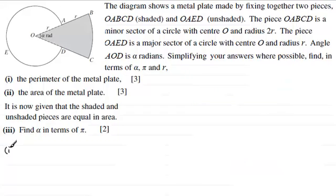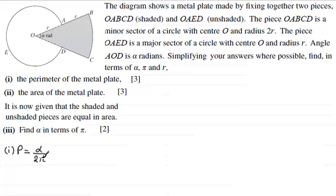Let's take you through part one. The perimeter p is going to equal first of all this arc length. This arc length is part of the circumference of a circle with centre O and radius 2r. We're going to have a fraction of that circumference — that fraction is alpha compared with a full turn of 2 pi radians — so we multiply it by the circumference, which is 2 pi times the radius 2r, giving us 2 pi times 2r.